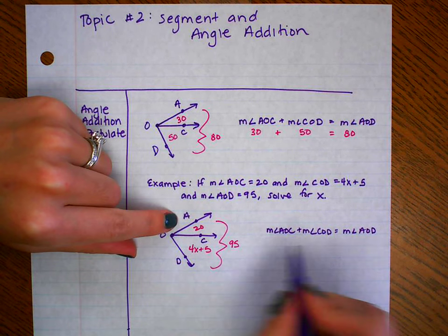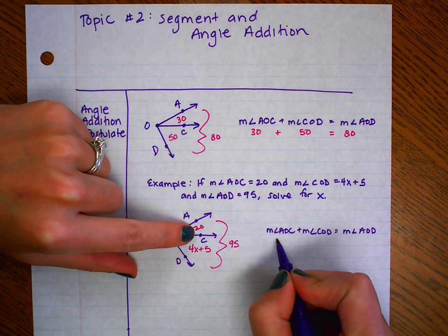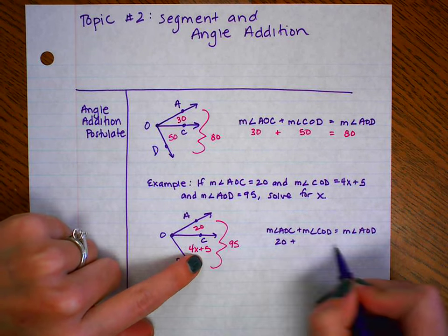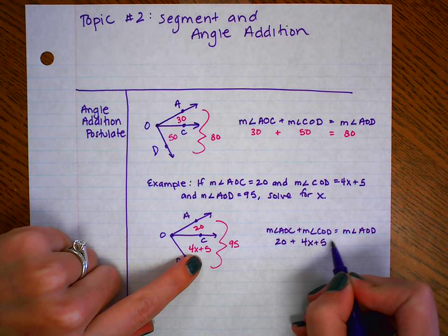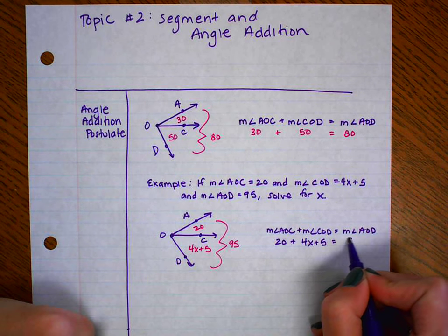Well, let's substitute in. The measure of angle AOC is 20, the measure of angle COD is 4X plus 5, and the whole thing is 95, so let's substitute that in.